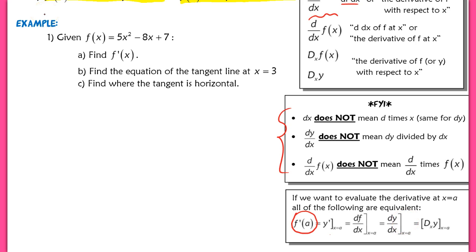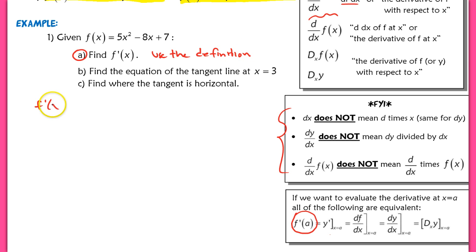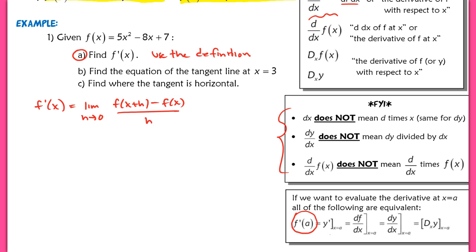Let's get started with our first example using the definition of the derivative. We have f(x) = 5x² − 8x + 7, and we want to find f prime of x. The definition states that the derivative is the limit as h approaches 0 of f(x+h) minus f(x) over h. I'm going to substitute in and work through the algebraic steps to calculate the difference quotient.